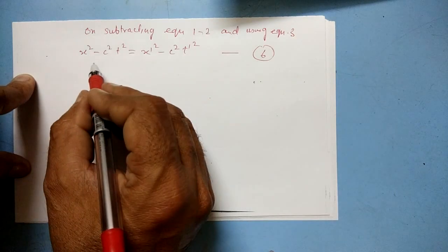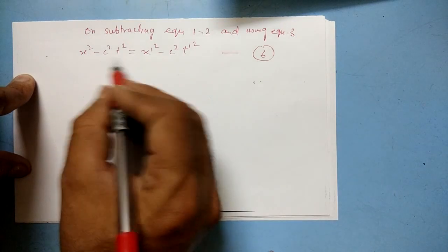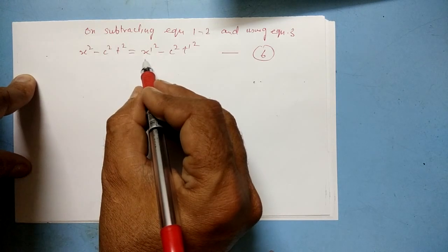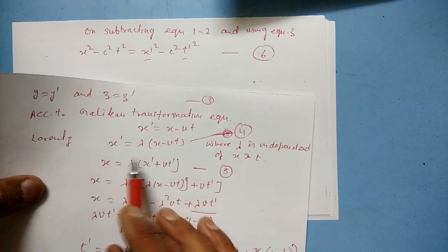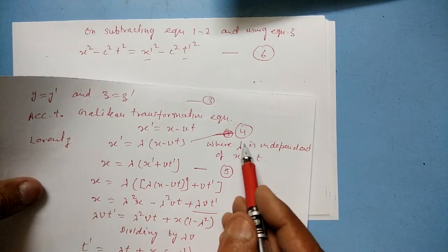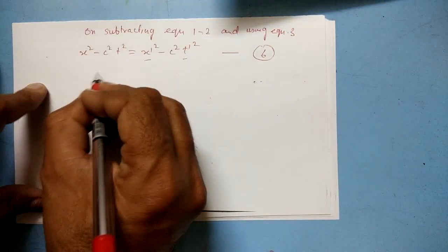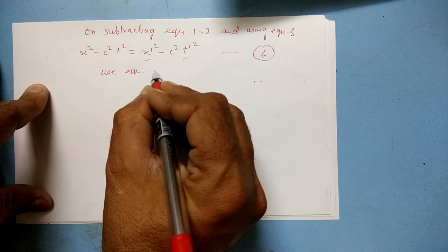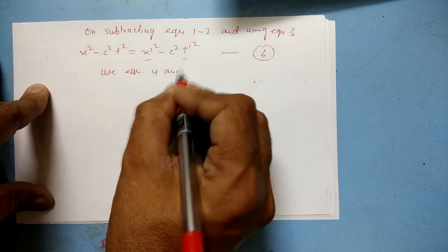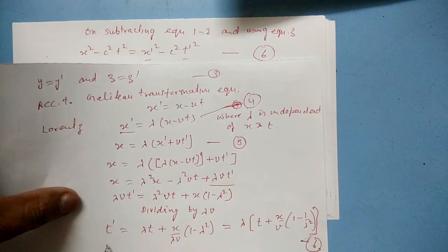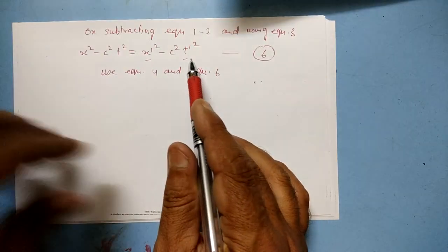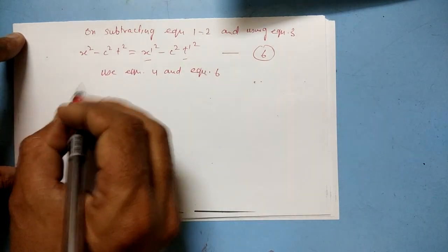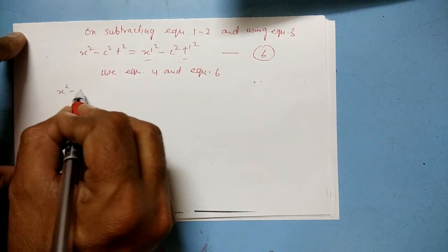In this expression we will substitute the values of x' and t'. We use equation 4 and equation 6 — substituting the values of x' and t' into equation number 6.